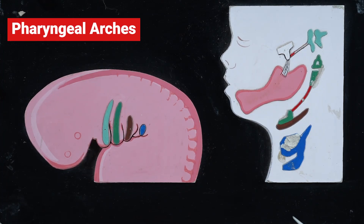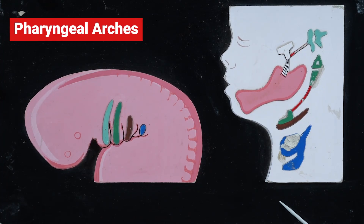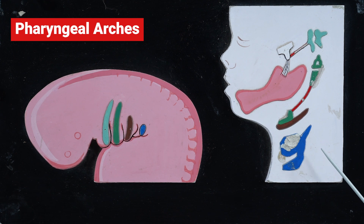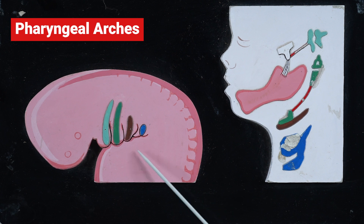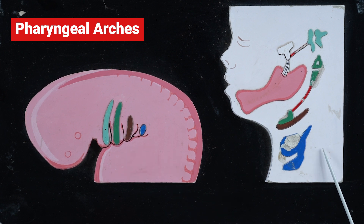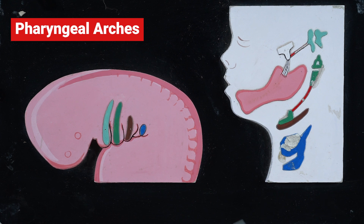Hi, let's learn about this model of pharyngeal arches where they have shown the cartilaginous derivatives of different arches. This is the lateral view of a developing embryo and this model represents the adult derivatives derived from each pharyngeal arch cartilage.